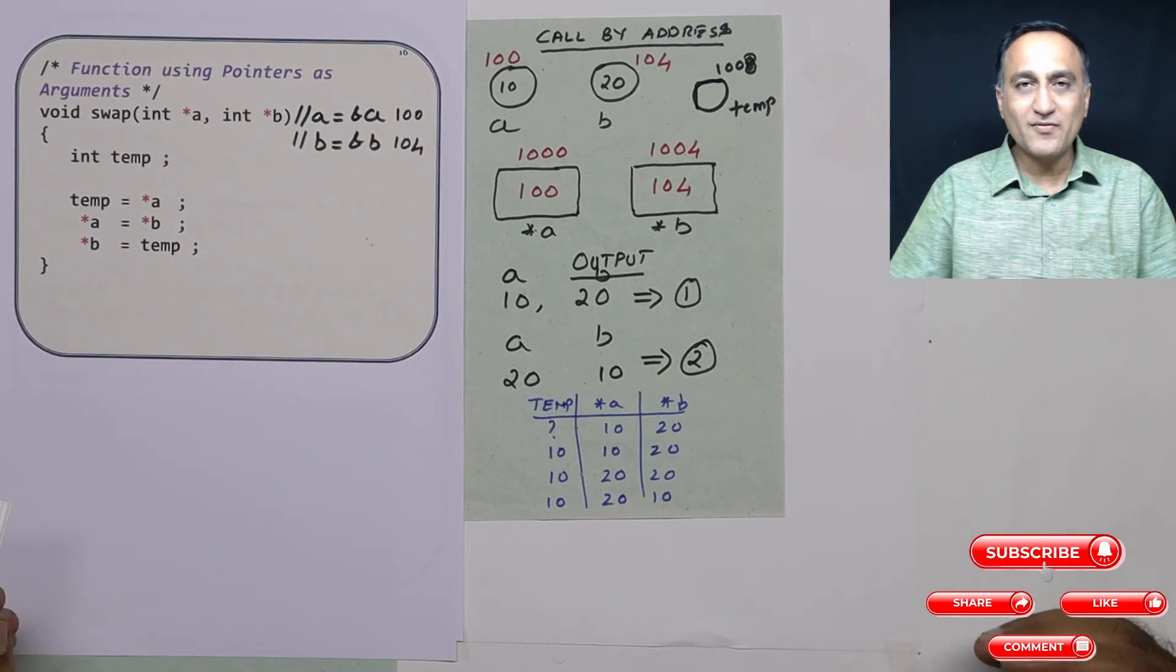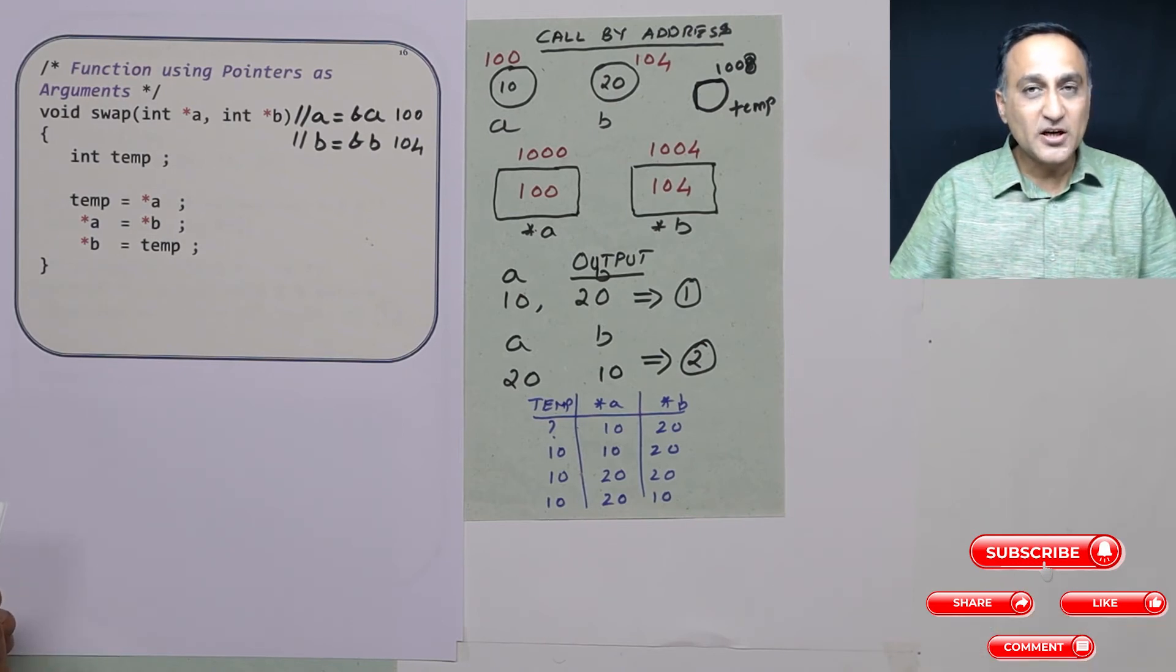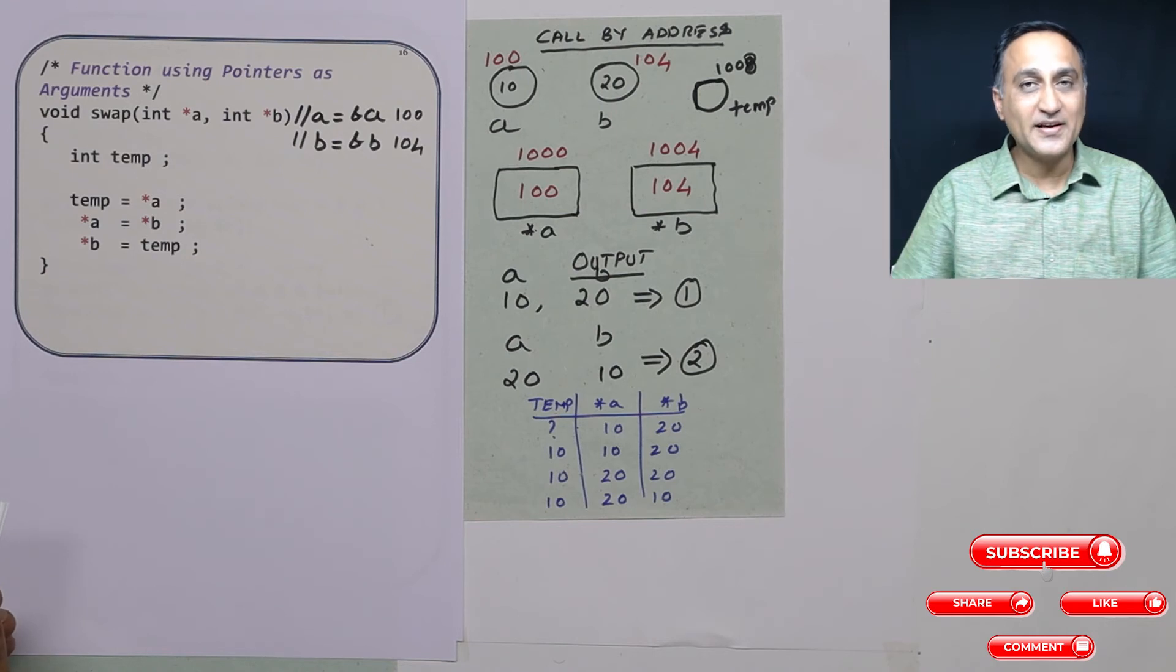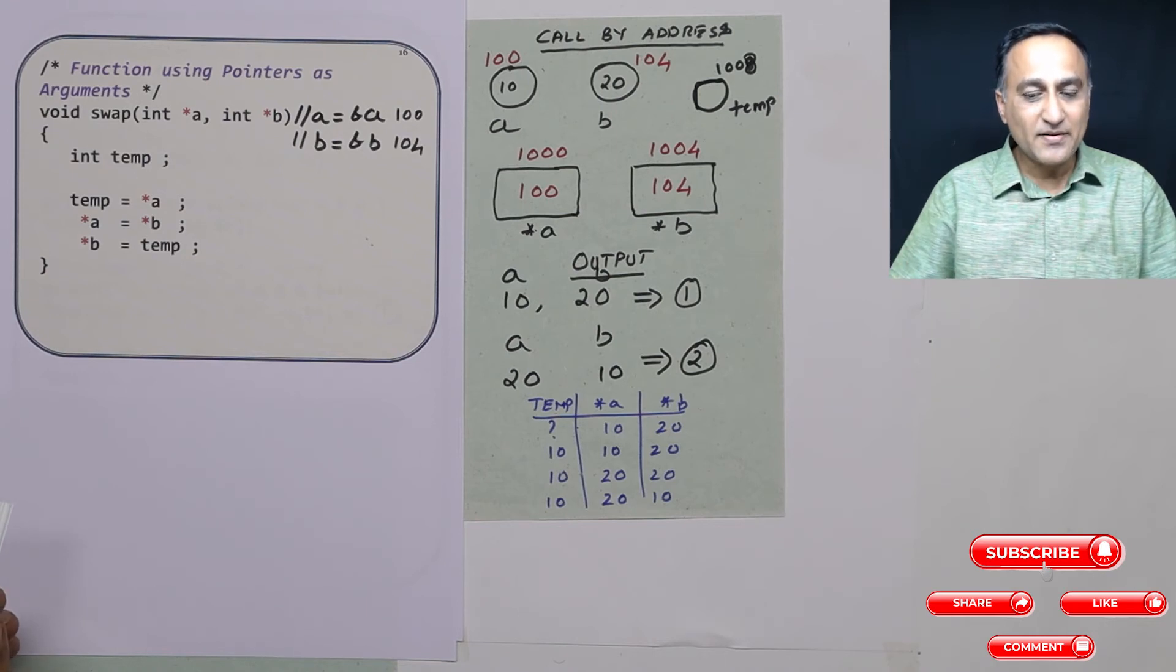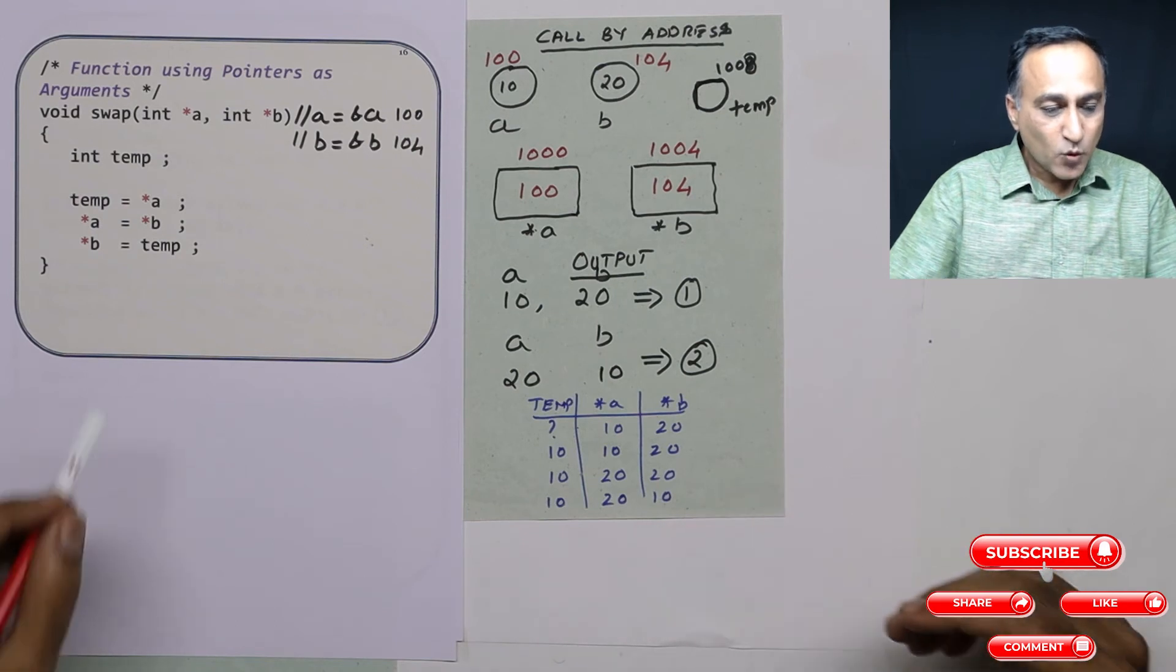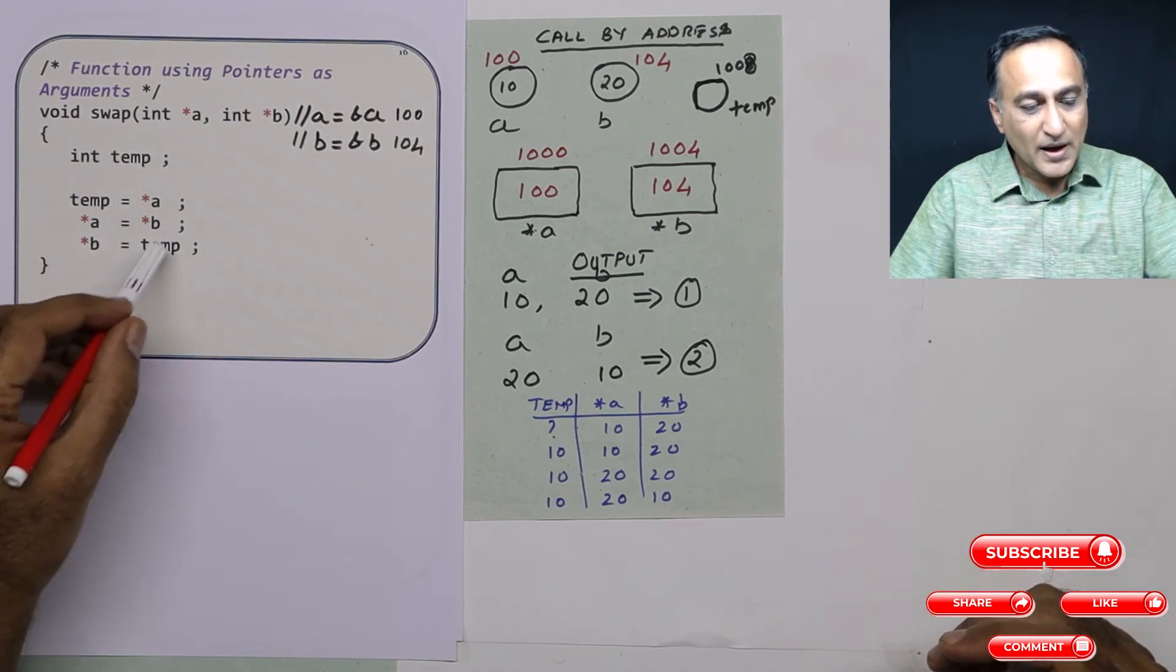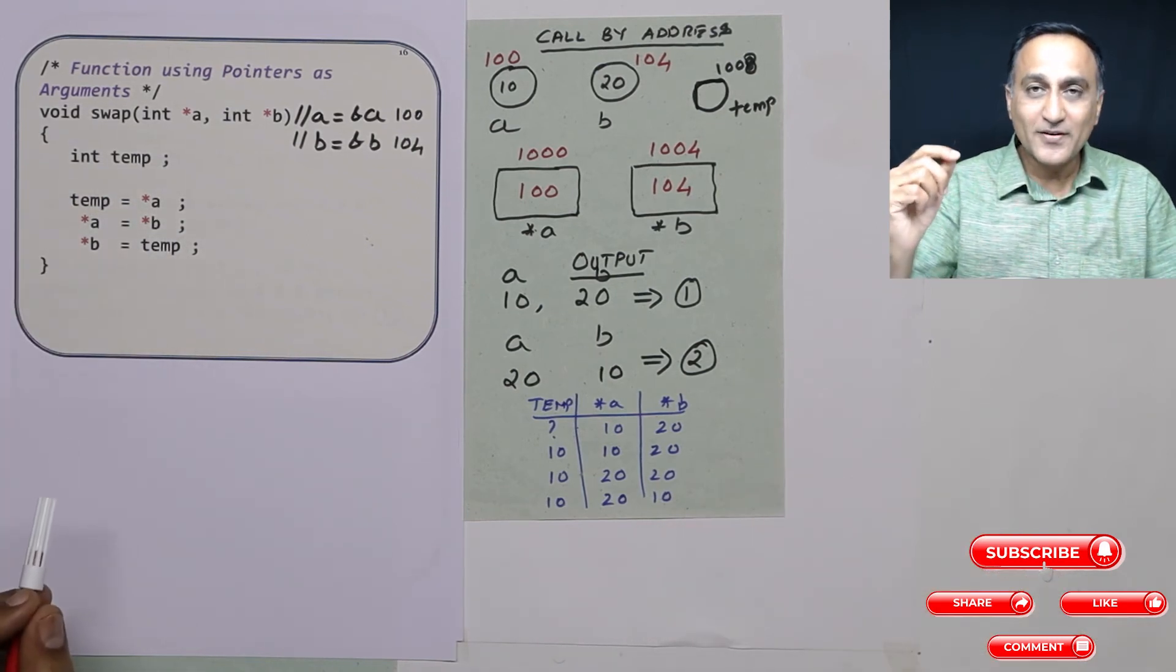Now with call by address, what we have done is we have done changes to the memory location directly. Since in pass by address the address was passed, whatever we played around with the values here, it is going to affect it in main.